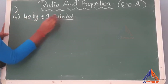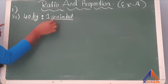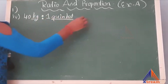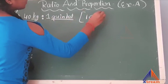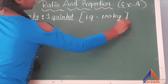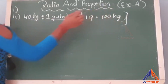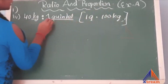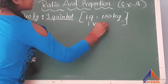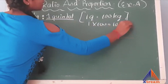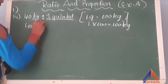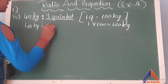Here we have kg and quintal, so we cannot convert kg into quintal. We should convert quintals into kg. First, know the value: 1 quintal is equal to 100 kg. So as they have given 1 quintal, 1 into 100 is equal to 100 kg. So now that becomes 40 kg to 100 kg.